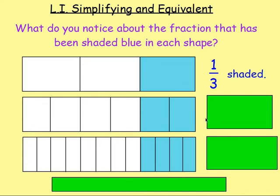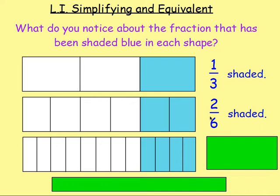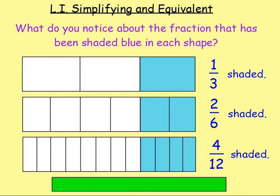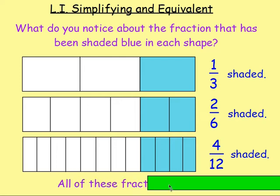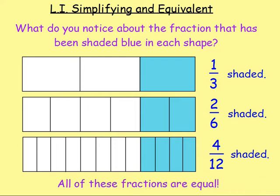What fraction has been shaded with this one? Two sixths - there's two parts shaded out of six. And with this one here, four twelfths. What do you notice about the fraction that's been shaded blue in each shape? You can see that all the fractions are equal. Looking at each diagram shaded blue, you can see it's the exact same amount, which means that one third is the same as two sixths, which is the same as four twelfths.